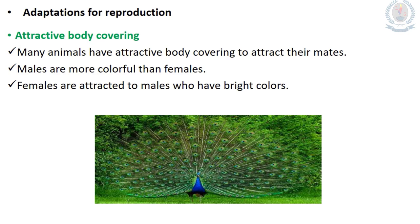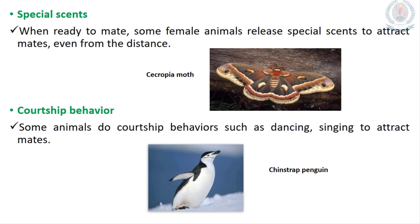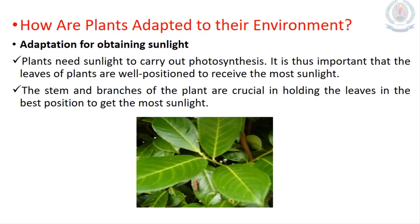There are also adaptations for reproduction. Some birds like the peacock and some animals have attractive body coverings to attract mates. Males are more colorful than females, and females are attracted to males with bright colors. Some animals such as the Sancropia moth release a special scent to attract males, and Chinstrap penguins show courtship behaviors to attract mates.